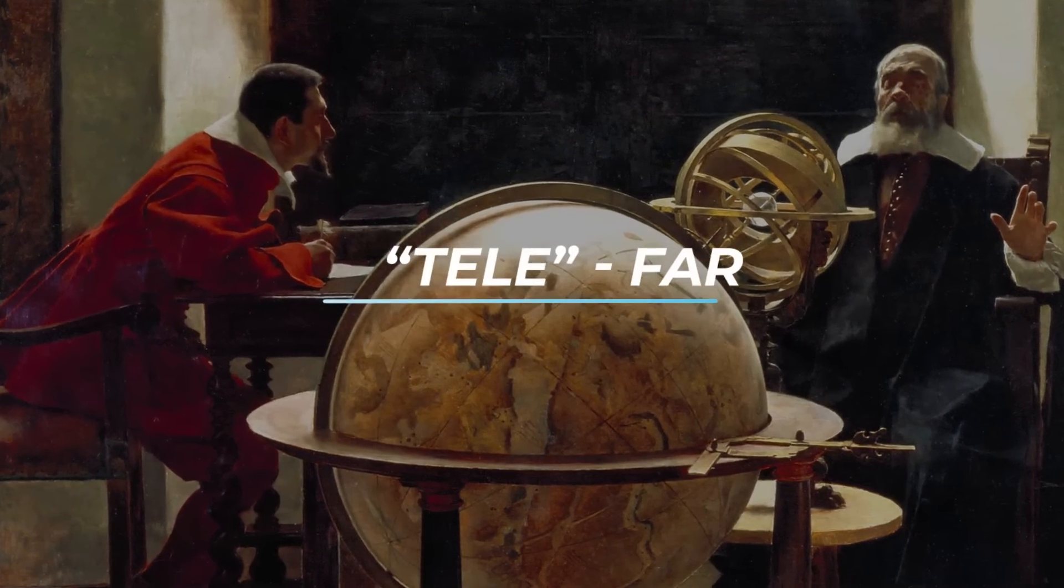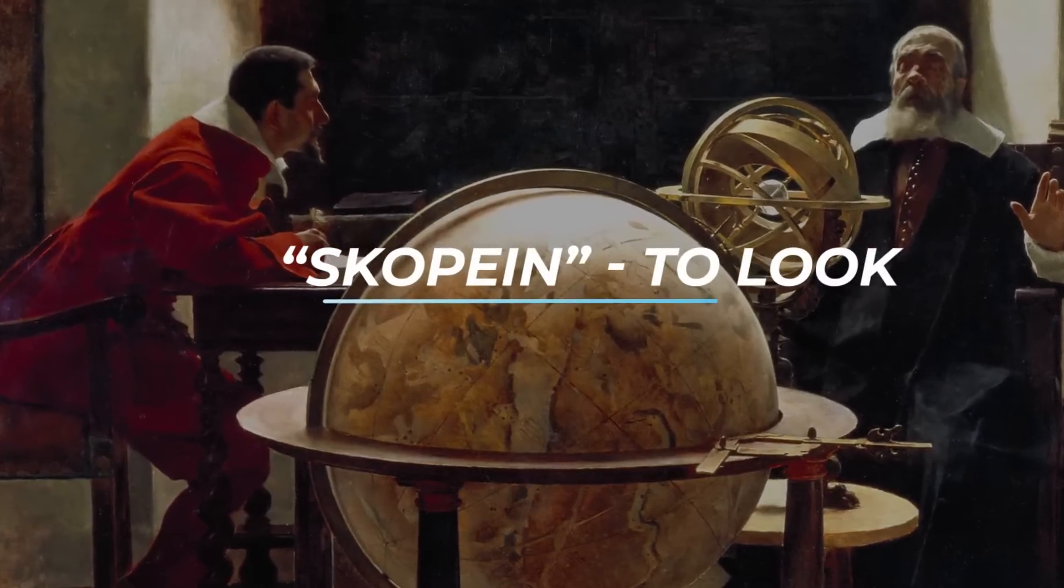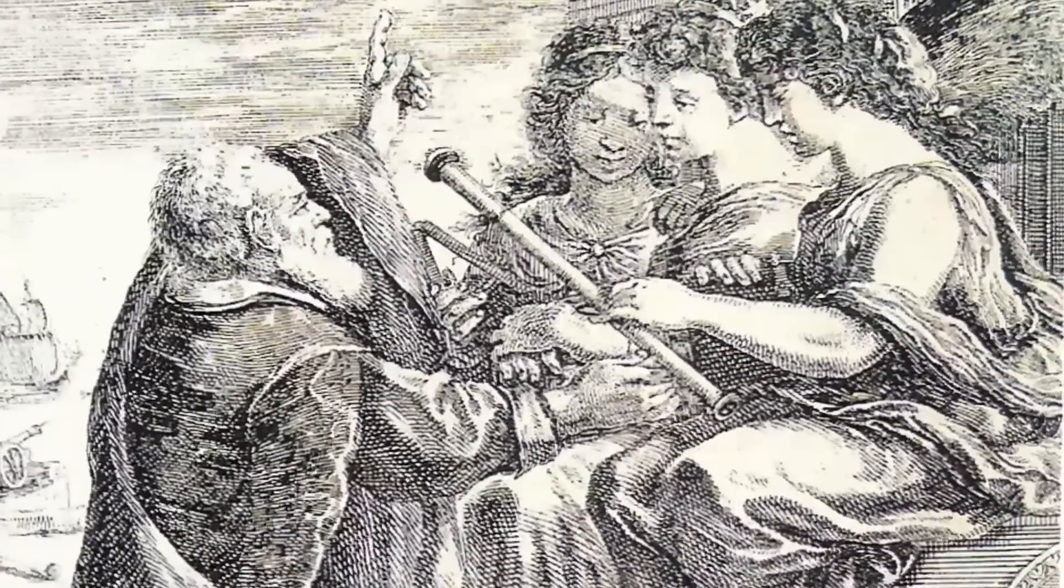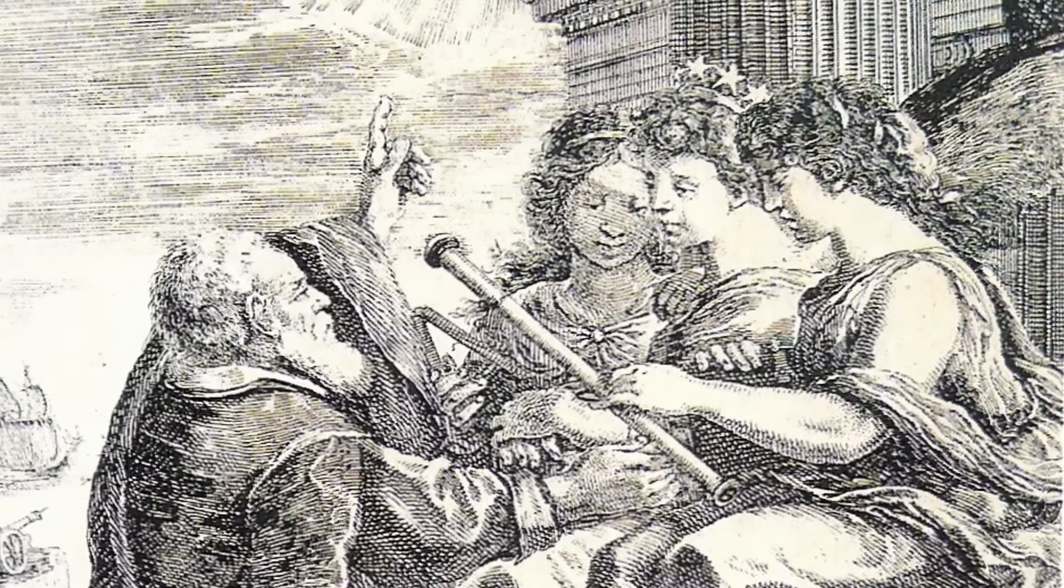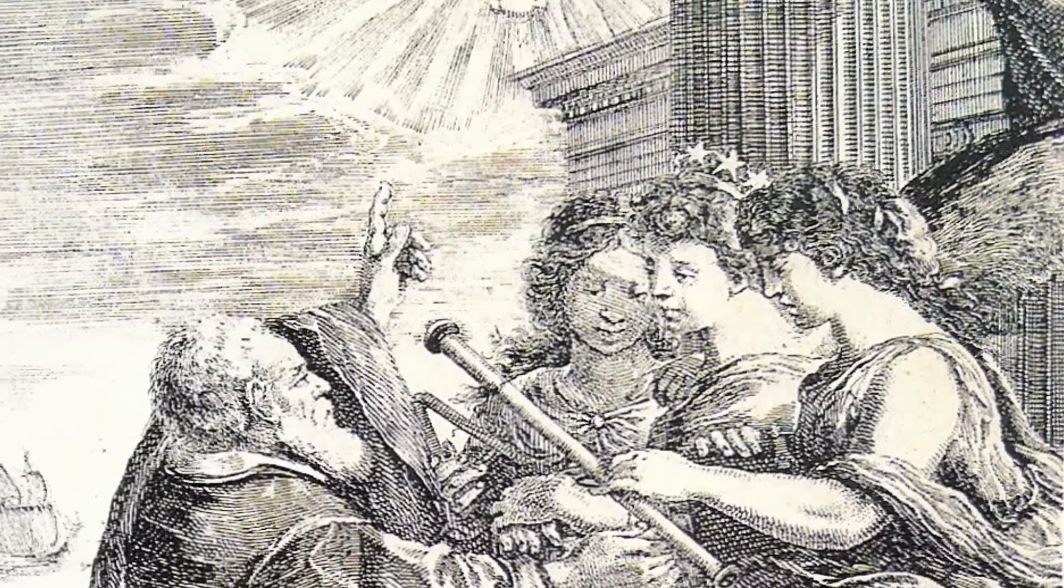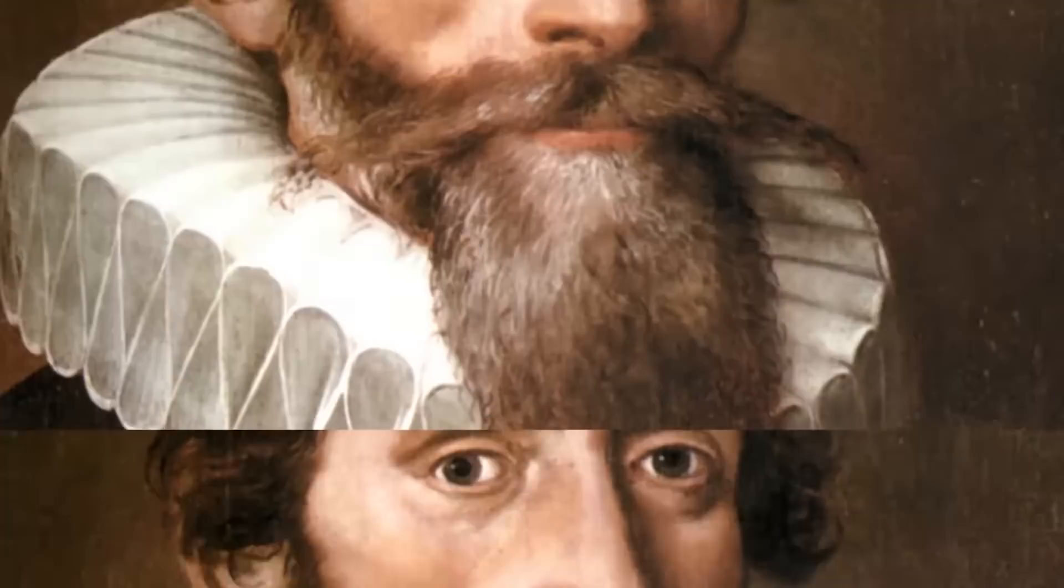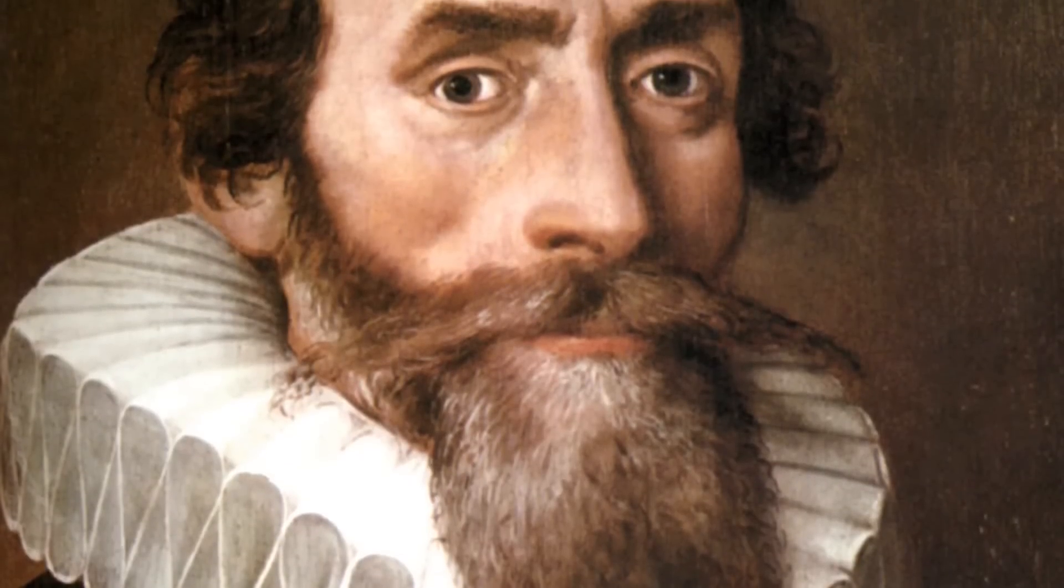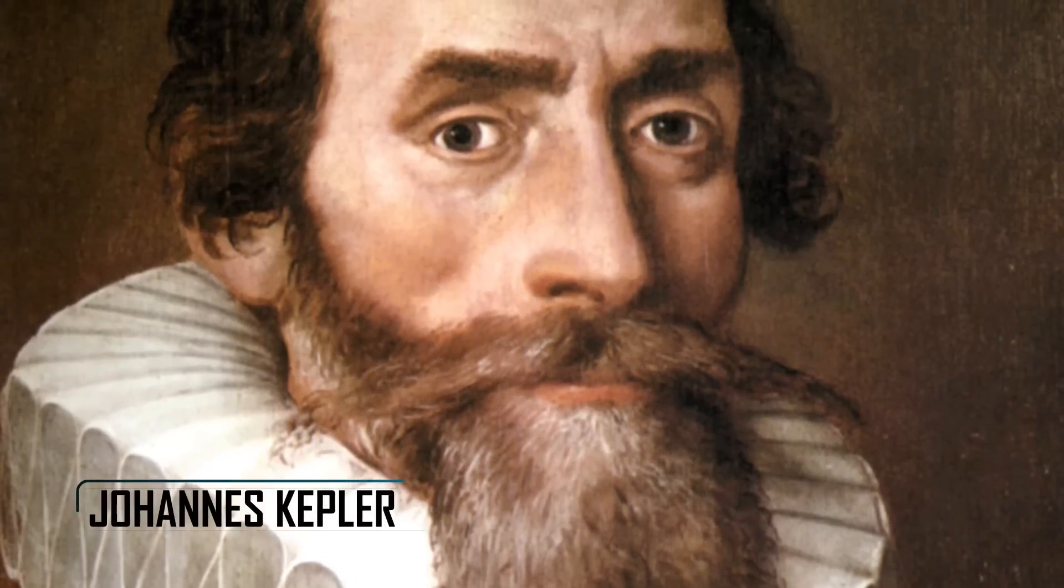Moreover, Galileo was the first one to use the term telescope, which comes from the Greek tele, far, and scopine, to look, a perfect definition for an instrument that helps to look at distant objects. Although its importance is undoubtful, these instruments needed a lot of improvements that were made by the famous Johannes Kepler.